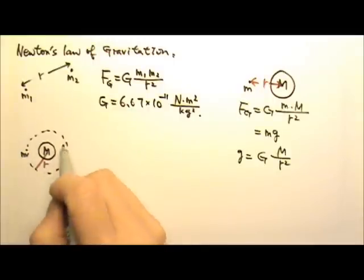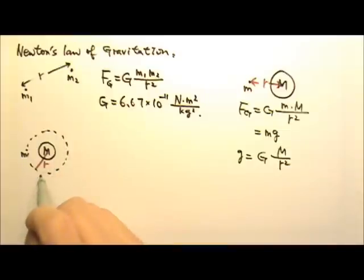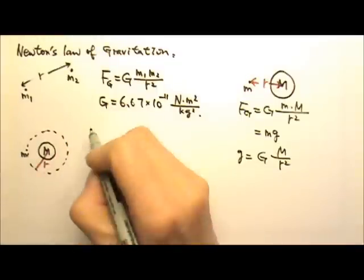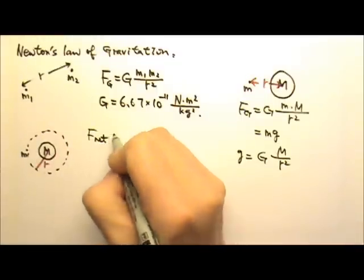If we have, say, a satellite in a circular orbit around a planet, then we can say this thing is doing circular motion. Usually for circular motion problems, we use net force equals to ma.